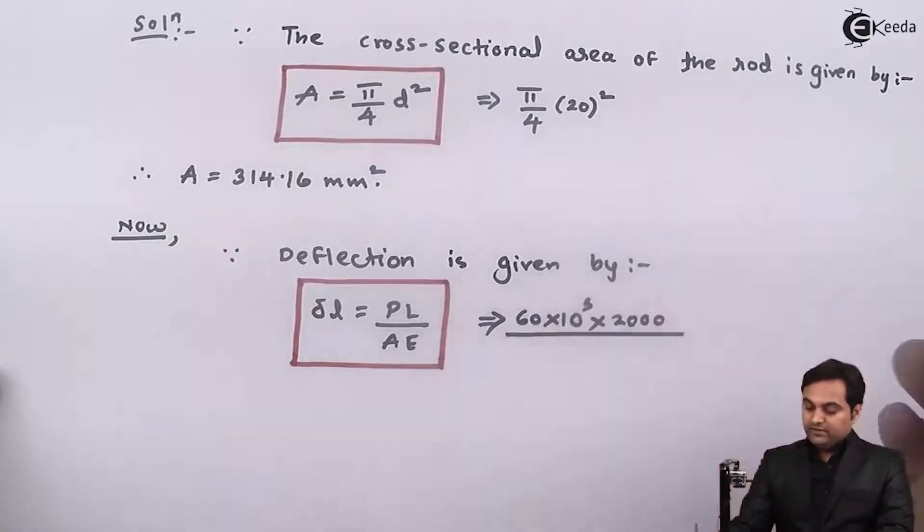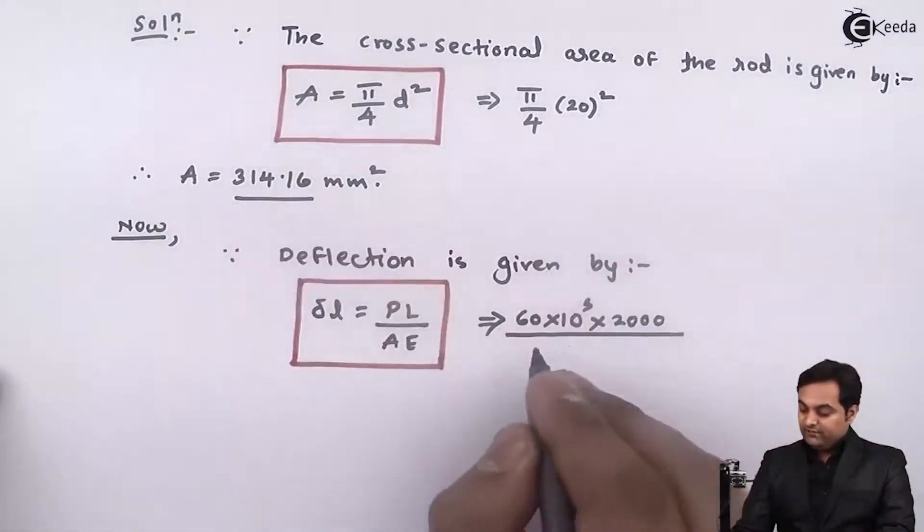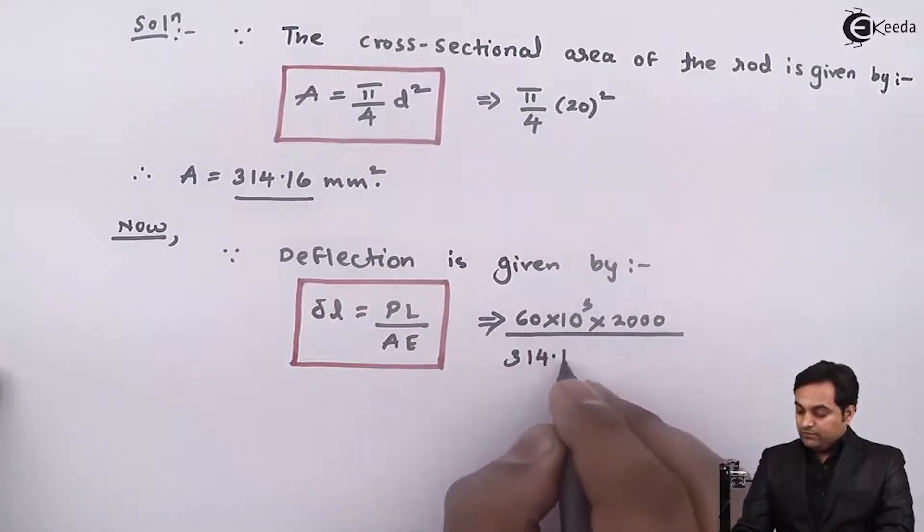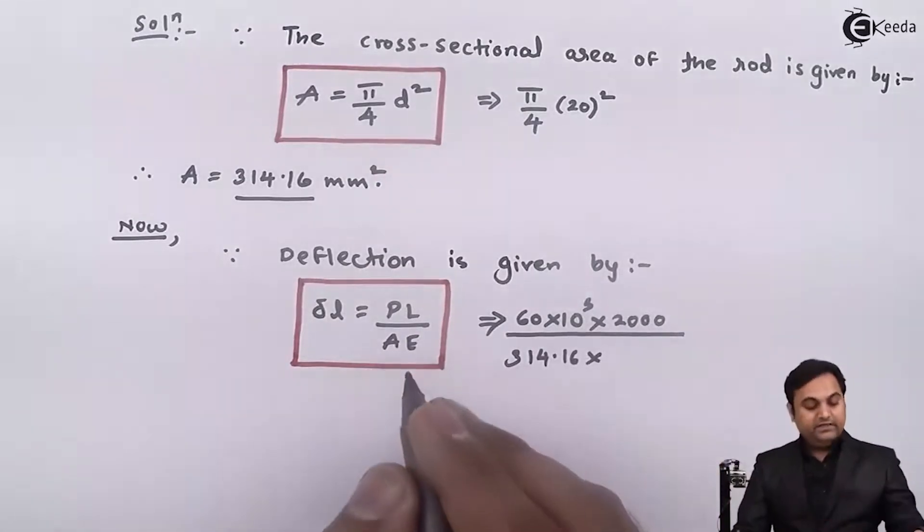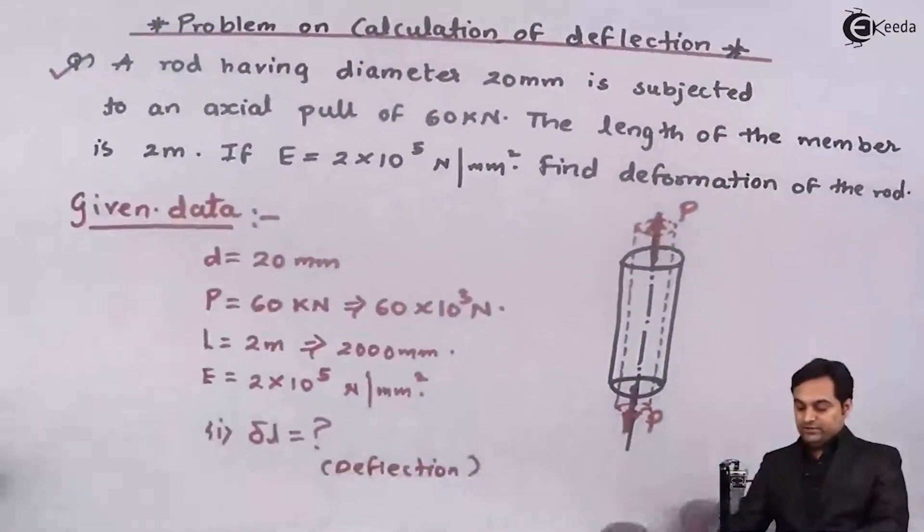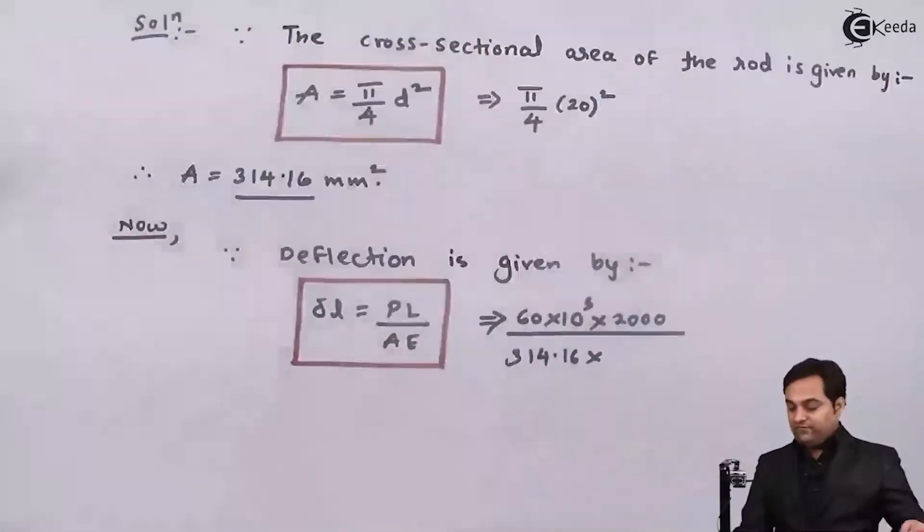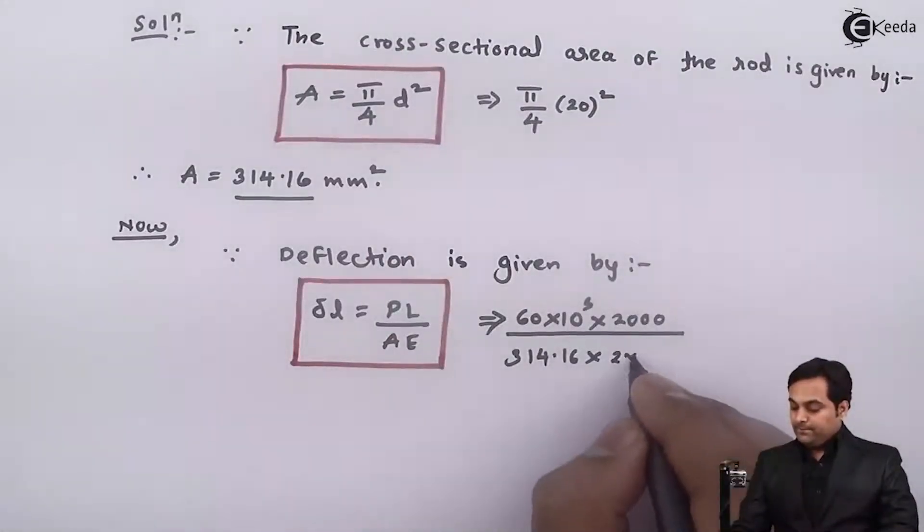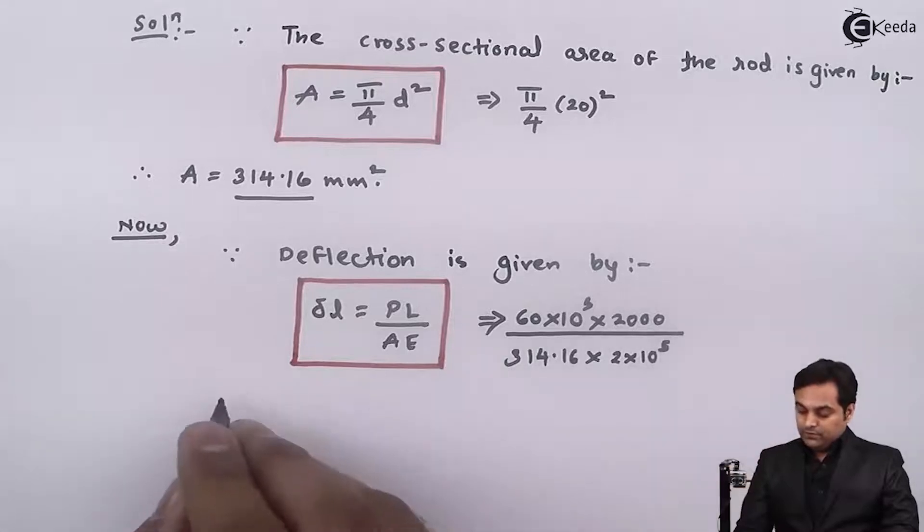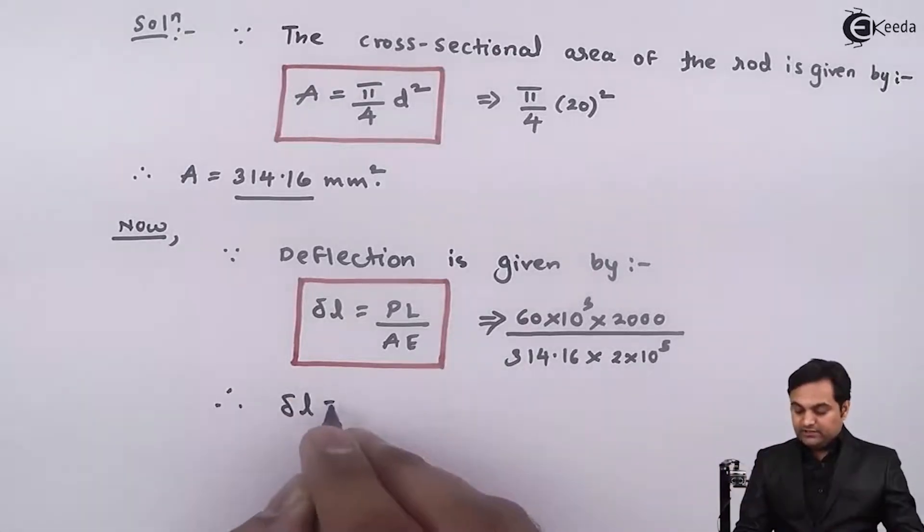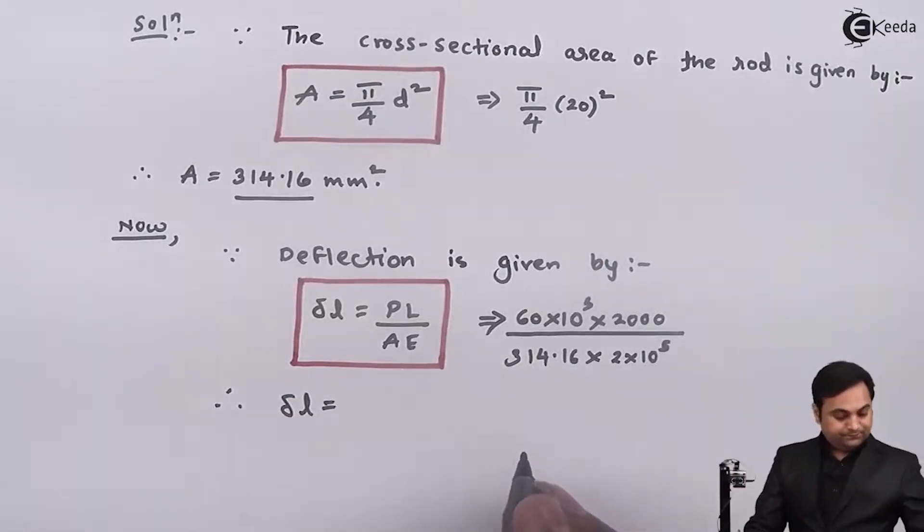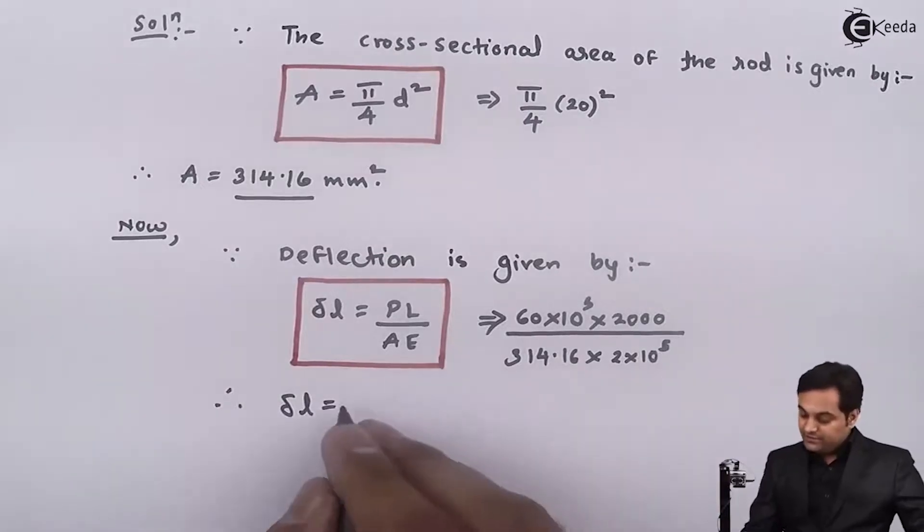Divided by area we have got the value as 314.16, and capital E, Young's modulus, 2 into 10 raise to 5. So from this I will get the answer of deflection, and my answer is 1.91 mm.